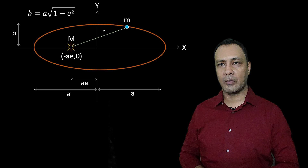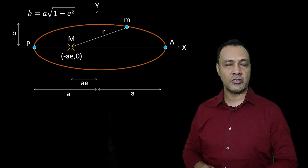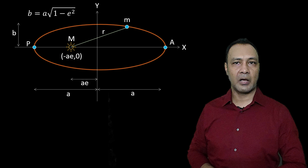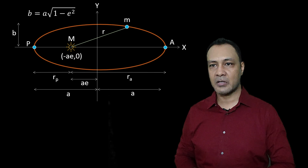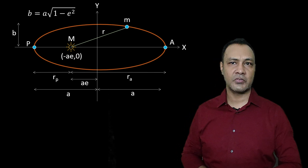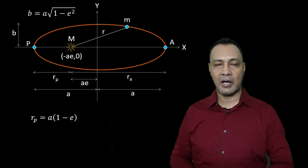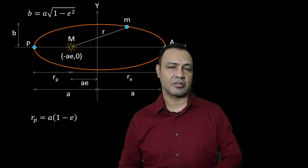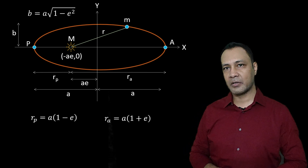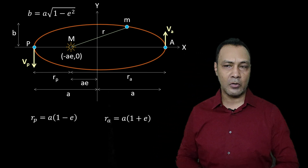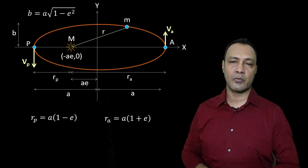There are two important positions of the planet in the elliptical orbit. One is called perihelion and the other is called aphelion. Perihelion is the position where the planet is nearest to the Sun, and aphelion is the position where the planet is farthest from the Sun. The distance at perihelion is Rp = A(1 − E) and at aphelion Ra = A(1 + E). Importantly, at these two points, the velocity vector is perpendicular to the position vector. At all other points, it is not perpendicular.